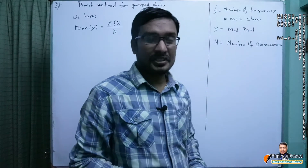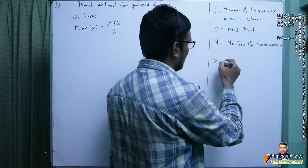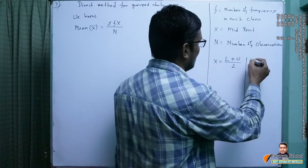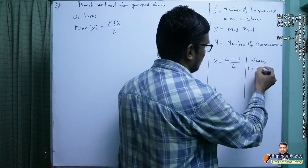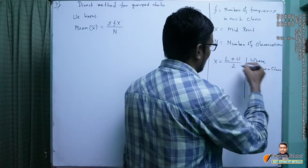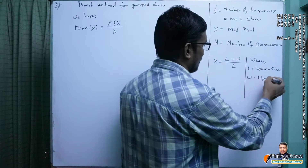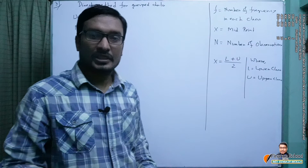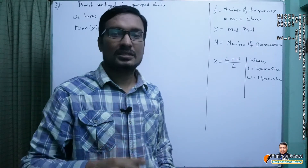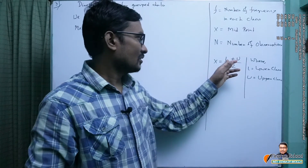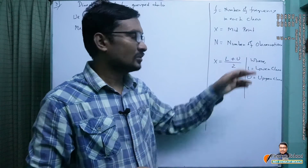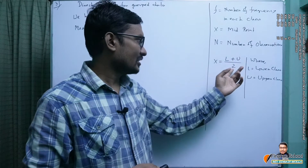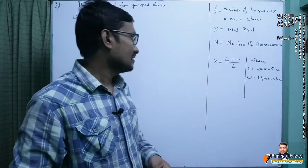To find the midpoint, we use the formula: x equals (l + u) divided by 2, where l equals the lower class and u equals the upper class. In grouped data, each class has two values — a lower value and a higher value. We add them and divide by two to get the midpoint of the class.